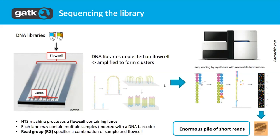Once they're attached, we will also amplify them with a process called bridge amplification. The reason we do that is so that the signal we get when we read off our bases is stronger — we read off a light signal based on dyes in our bases and we want there to be more light. That's the only reason. And we want that light to be concentrated in one small area. The PCR amplification before was to increase just the library size, but here we want to amplify for signal strength.